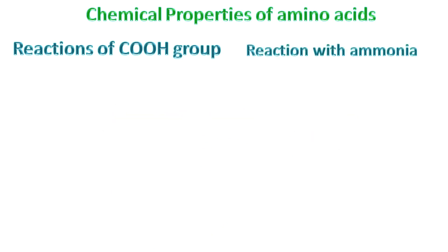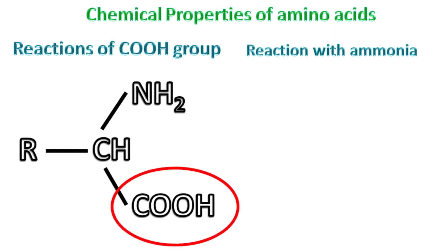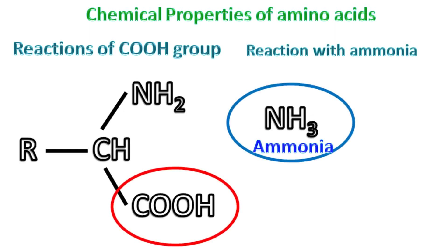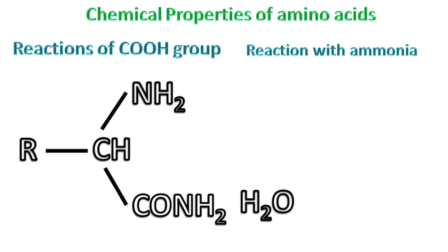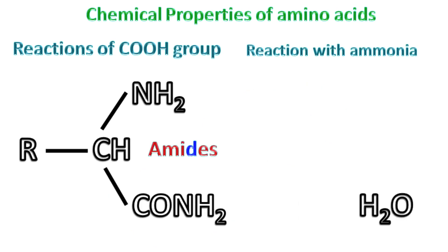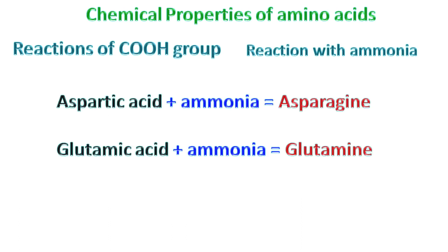Reaction with ammonia: the carboxyl group of an amino acid can react with ammonia to form amides. For example, aspartic acid reacts with ammonia to form asparagine, while glutamic acid reacts with ammonia to form glutamine.